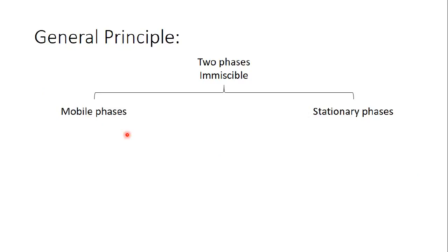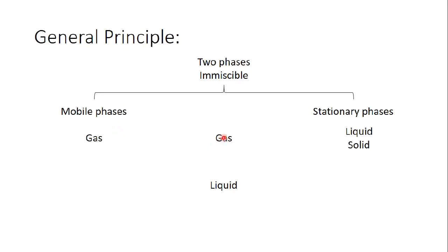There are different types of chromatography. In gas chromatography, the mobile phase is a gas and the stationary phase is either liquid or solid — used when the sample to be separated consists of gases. In liquid chromatography, the mobile phase is liquid and the stationary phase can be solid or liquid — used when the sample is liquid. The sample is always mixed with or dissolved in the mobile phase, so they must be in the same state.